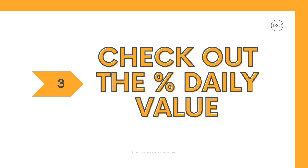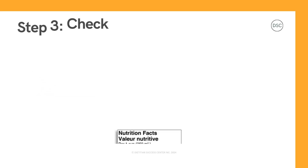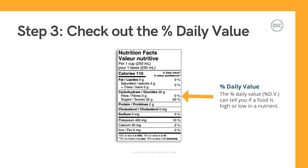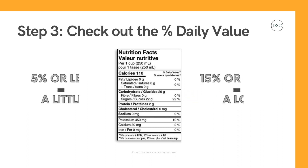This brings us to step number three: check out the percent daily value. You may be wondering what the percentage listed along the right side of the table means. This is the percent daily value, or percent DV. This value can tell you if a food is high or low in a specific nutrient. A good rule of thumb is that five percent or less is considered a little, and 15 percent or more is a lot.